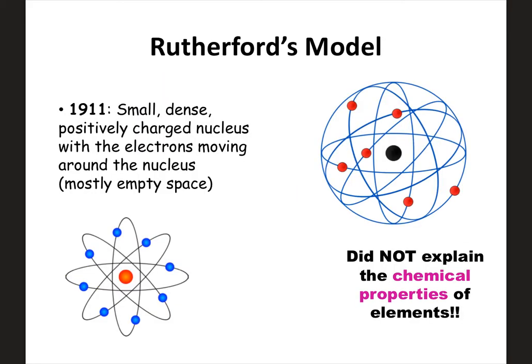This brings us to Rutherford's model of the atom. From the gold foil experiment, Rutherford discovered that the atom is mostly empty space and that there's a dense, positively charged nucleus in the center. Our model now has to incorporate these ideas. From here on out, all models of the atom always have a positively charged nucleus in the center — Rutherford's experiment proved that and it still holds up. The electrons are outside the nucleus and moving around it all over the place.